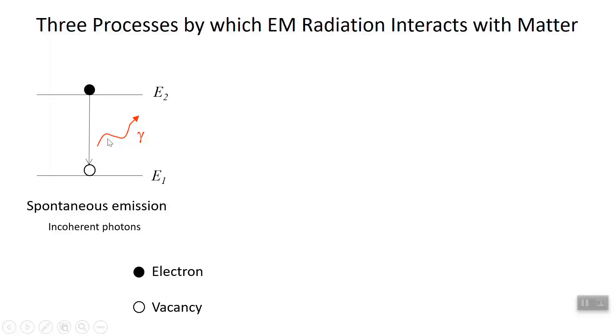The photons that come out are incoherent. What does that mean? So if I have multiple atoms emitting these photons, or just multiple electrons in a conduction band going into a valence band, the photons come out without any coherence.